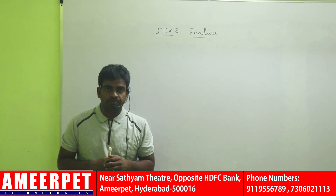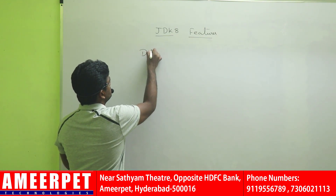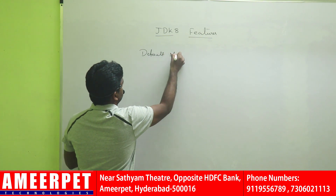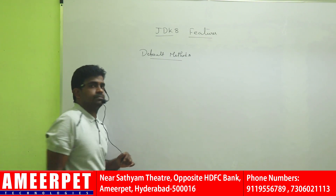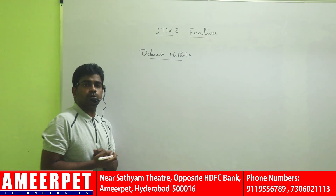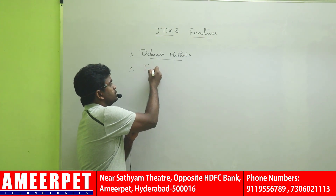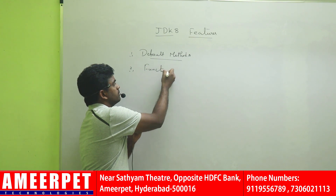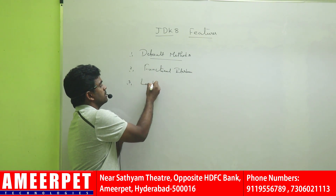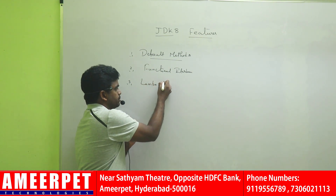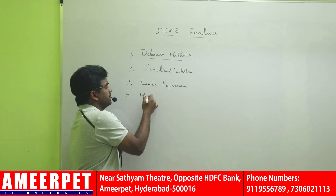So what are the JDK 8 features? In JDK 8, the first one is default methods in interface. This is a very, very important feature — default methods in interface. From JDK 8 only, it is allowed to define default methods in an interface. The second one is functional interface. After functional interface, most of the questions they ask are from lambda expressions. After that, the fourth one is method references.